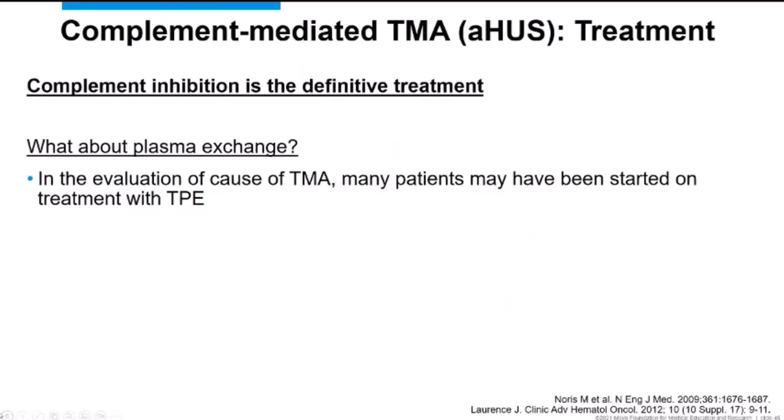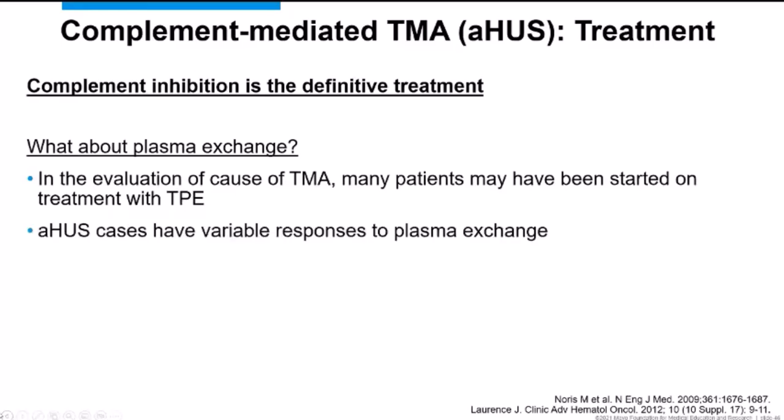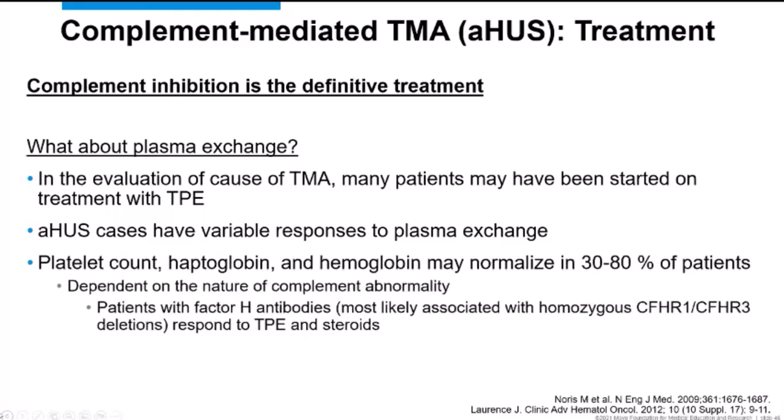For treatment of complement-mediated TMA, the definitive therapy is complement inhibition — not plasma exchange, which is the cornerstone for TTP. Many aHUS patients are started on plasma exchange while TTP is being ruled out. Plasma exchange may improve hematologic parameters in about 30–80% of patients depending on the underlying complement abnormality, but it alone will not improve creatinine or LDH to a remarkable degree.